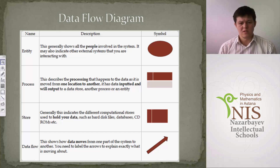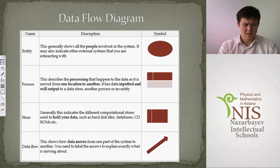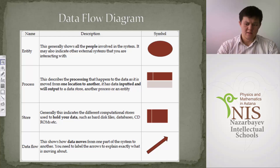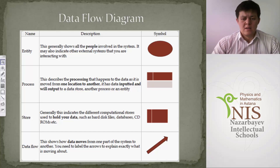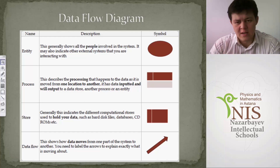Now let's look at the data flow diagram. DFD is a very important part, and in the program for grades 11 and 12 you can see that DFD is an inevitable part of analysis. Any DFD consists of four main elements: entity, process, data store, and data flow. They have corresponding symbols: an ellipse, a rectangle, a special open rectangle, and an arrow. We usually use the Gane-Sarson model.